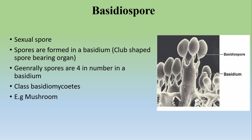The third type are basidiospores. Basidiospores are formed in a club-shaped structure known as a basidium, and generally there are four spores in a basidium. The class Basidiomycetes forms these basidiospores — an example is mushroom. This concludes the video on reproduction in fungi. The next video in this series will discuss the classification of fungi on different criteria.